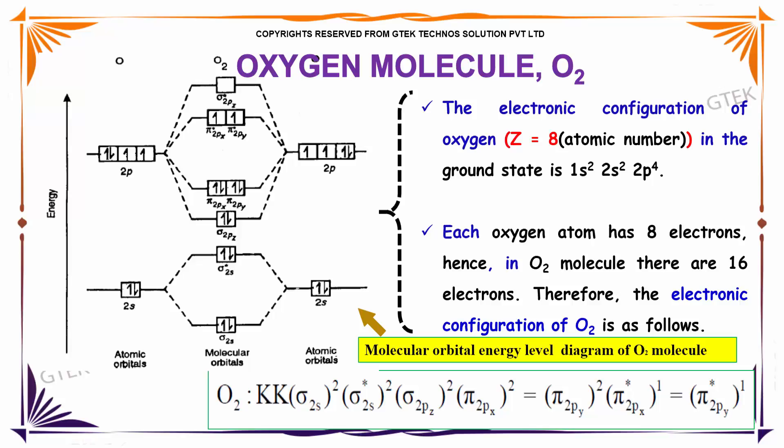For O2 is KK of sigma 2s2, sigma star antibond 2s2. You have got sigma 2pz and you will be having a pi of 2px which is equal to pi of 2py and you got your pi star 2px which is 1 and pi star 2py of 1.